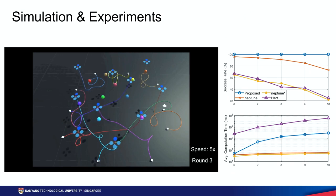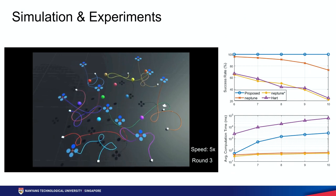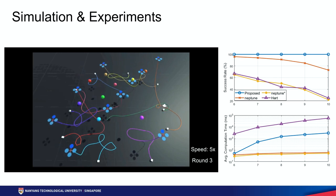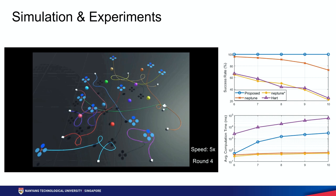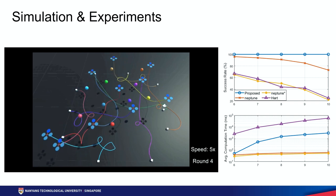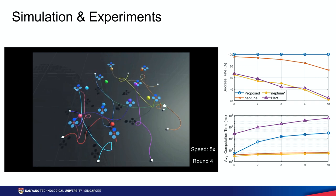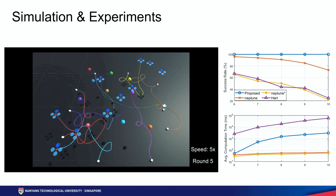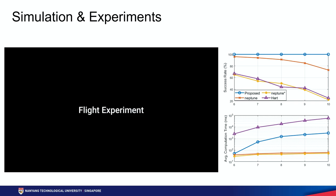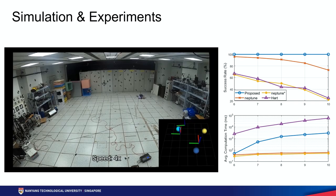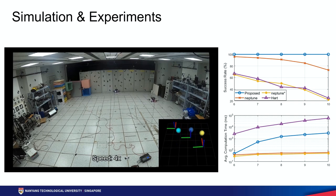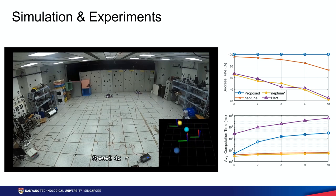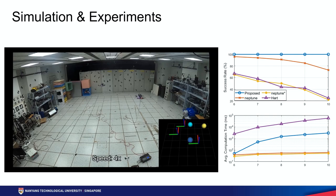Simulation and real-flight experiments are conducted to verify the proposed method. In this video, 10 tethered drones are simulated to reach randomized goals. We can see the robots moving in a grid-like structure because the path generated from the permutation grid is directly projected onto the real grid space in the workspace. Simulations of different numbers of robots are carried out, and our approach is the only one that achieves 100% success rate for all scenarios. Our approach can generate a feasible non-entangling path in less than one second for seven robots. Real-flight experiments using three drones show that the proposed approach is also applicable in real workspace with realistic power cables.